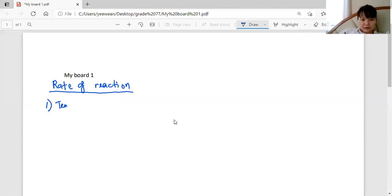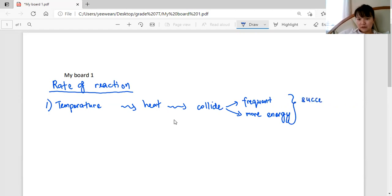One is the temperature. So when you increase the temperature or if you heat it up, then the particles there will collide more, collide more frequently and with more energy. So therefore it will be a successful or effective collision. That is why the rate of reaction would increase. So if you increase the temperature, rate of reaction would increase. That's the first factor.